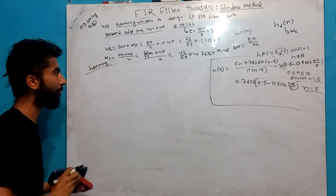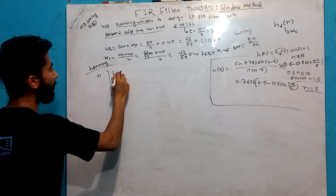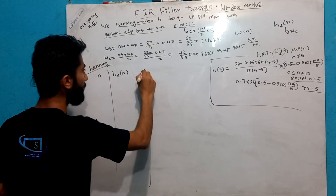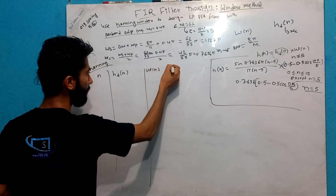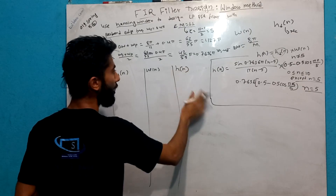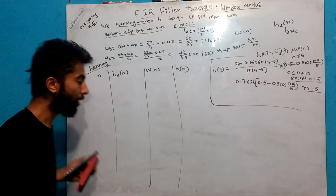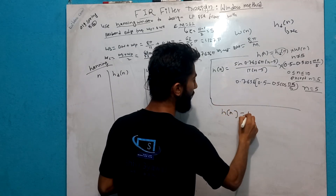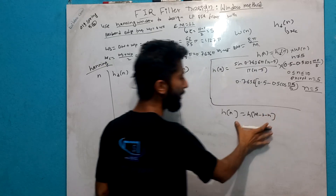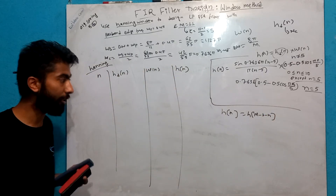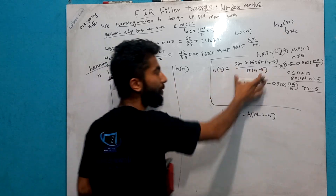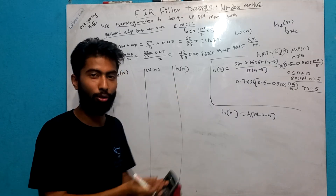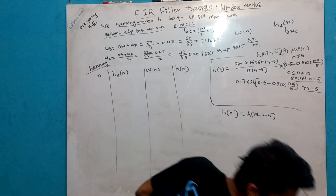Finally, the value at n equals 0.5. I have calculated the 5 sum of values. We have done the palindromic property, which means h(n) equals h(N−1−n). This is the linear phase filter property. So this is a linear phase FIR filter. That is how to set up and solve this equation.